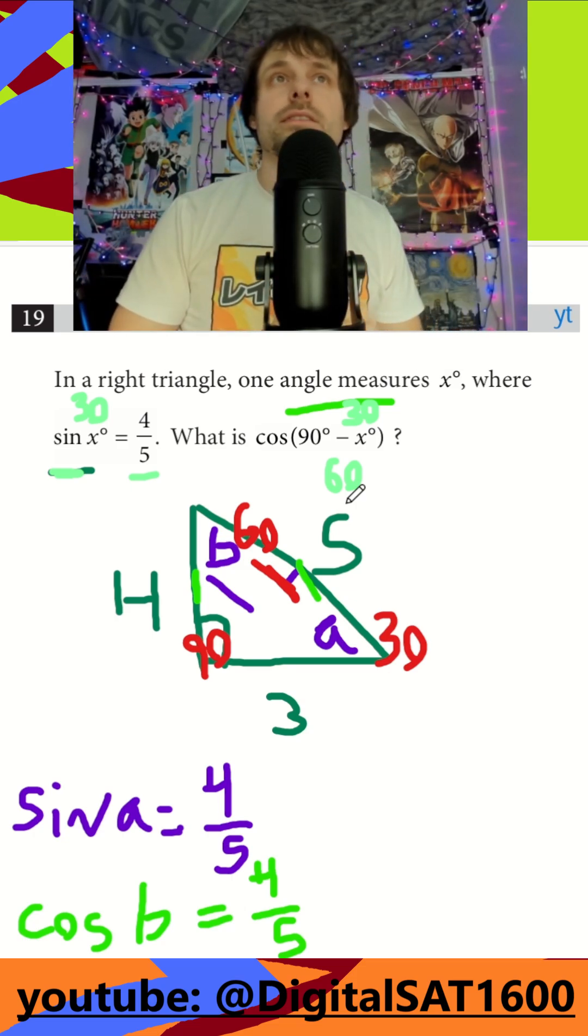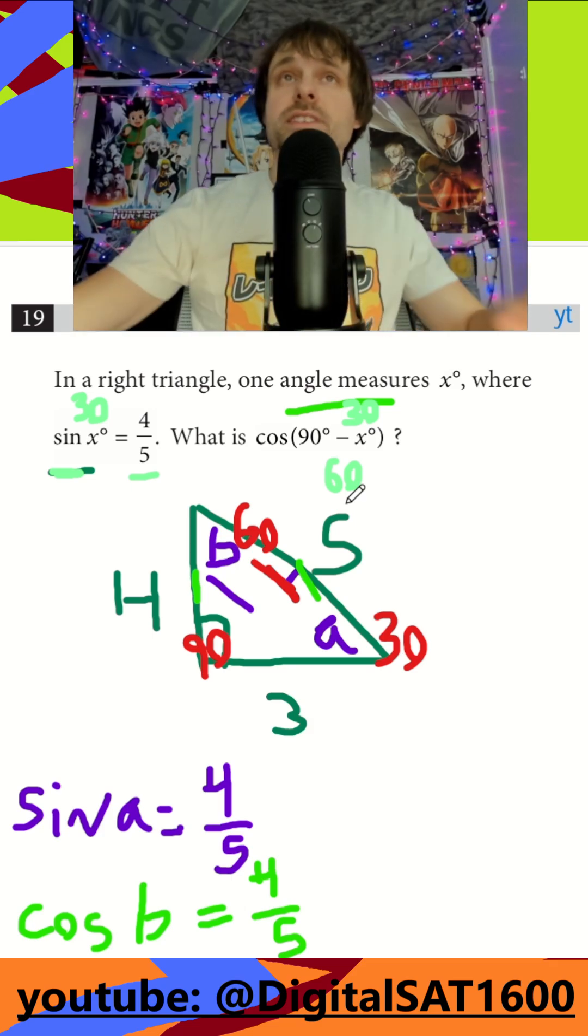And yeah, that's it. So again, if sine of X is equal to 4 fifths, cosine of 60 should also be equal to 4 fifths.